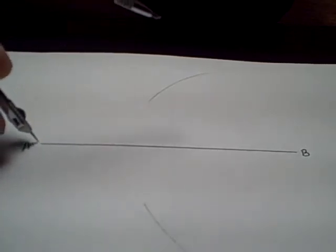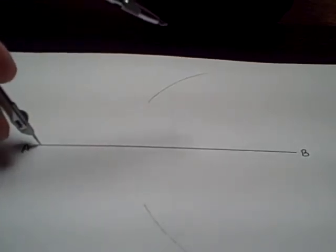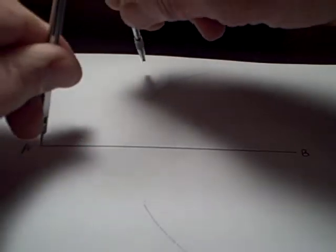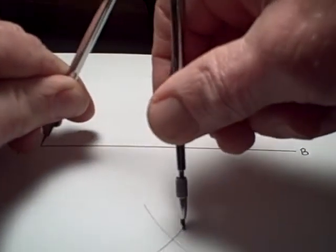Now repeat that procedure except this time put your point of the compass at point A. Draw that segment and draw that segment of the circle. Now you see that those two segments that I've drawn on top intersect as do the ones on the bottom.